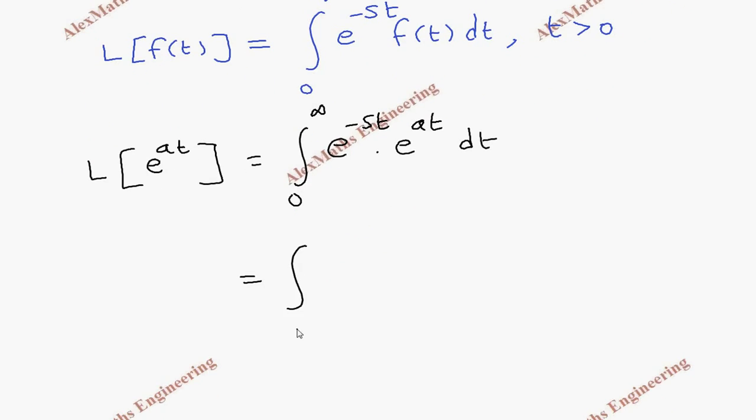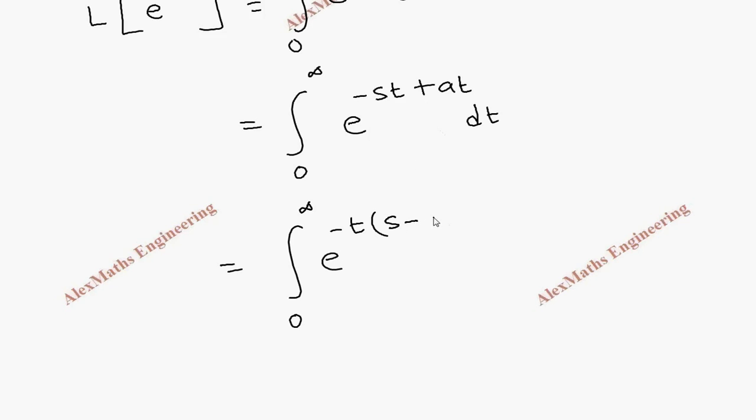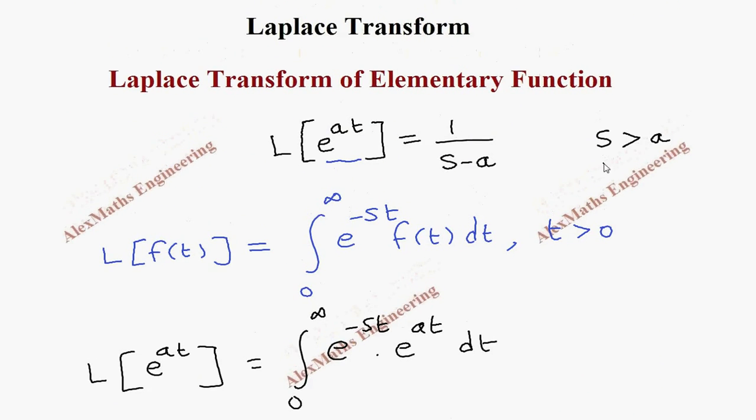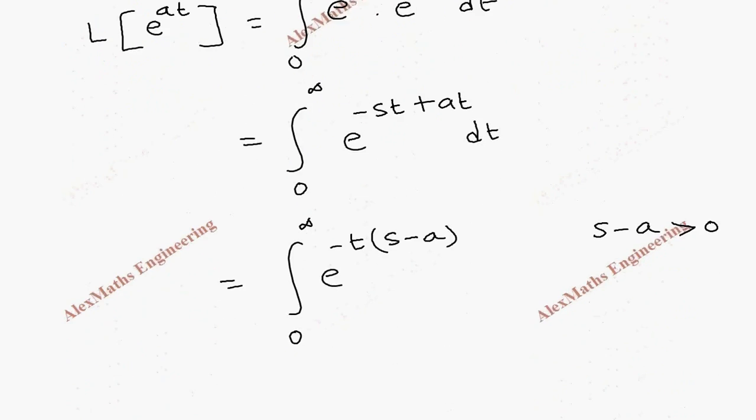Since the bases are the same, we add the powers: −st + at. We take −t common in the power, so the first remaining term is s, and with the minus taken common there is a minus sign before a, giving us −t(s − a). Since s is greater than a, s − a is greater than zero.